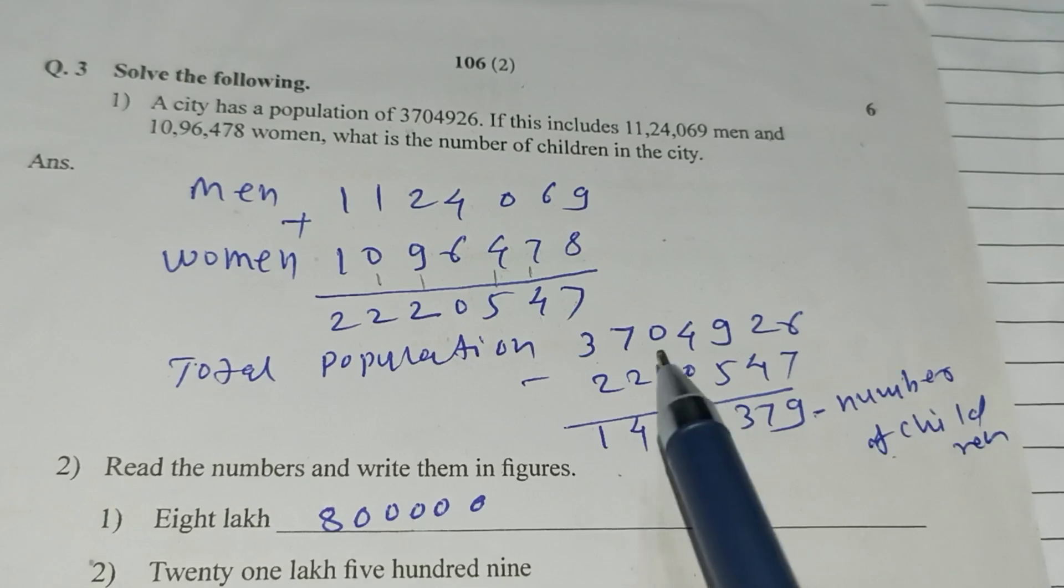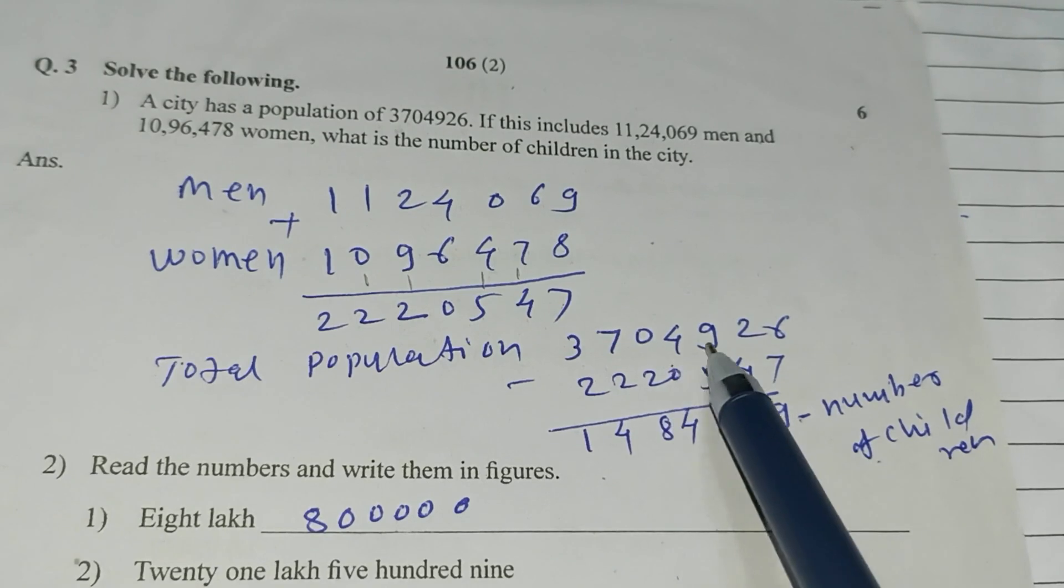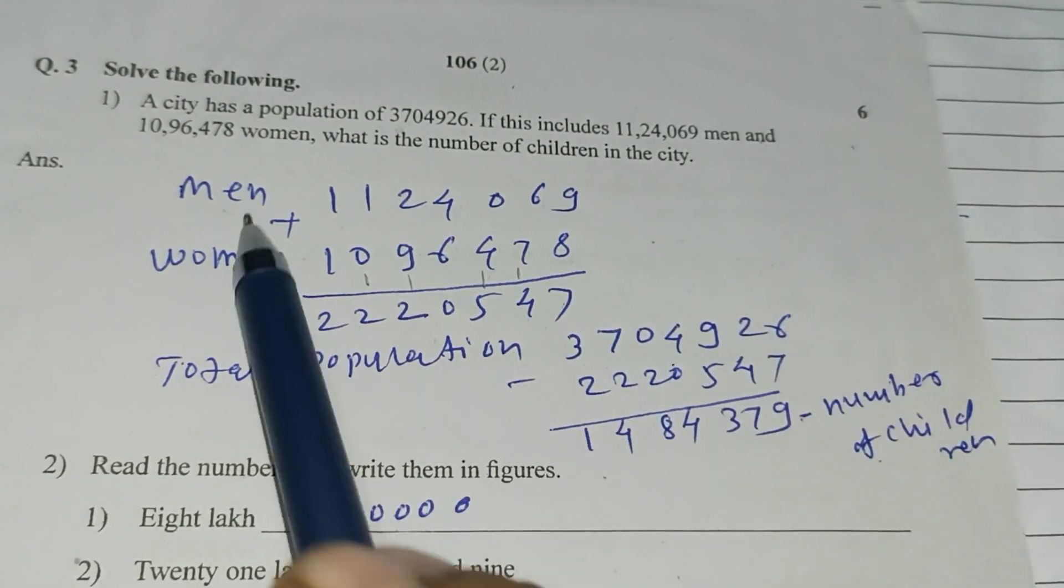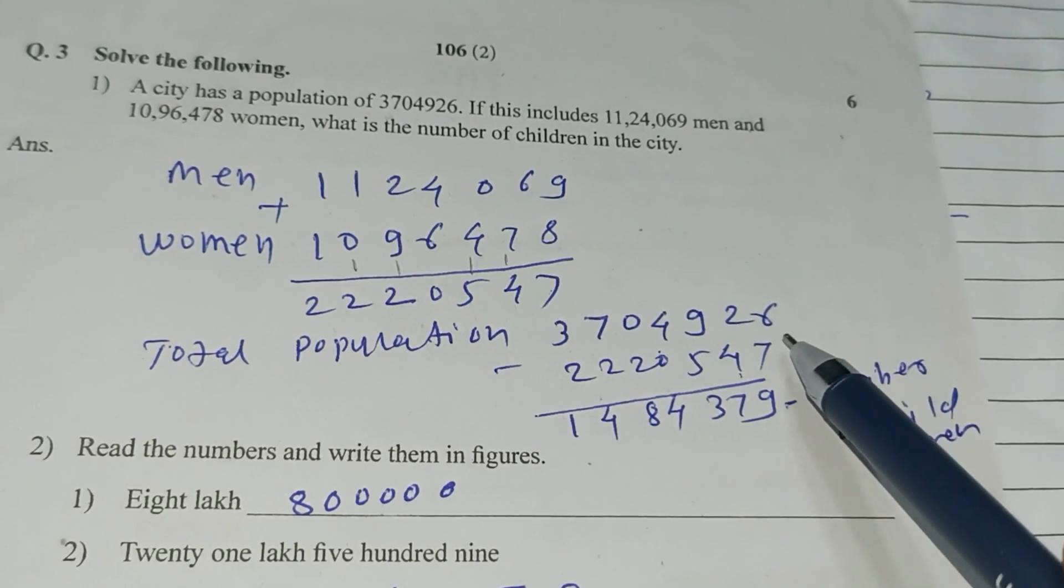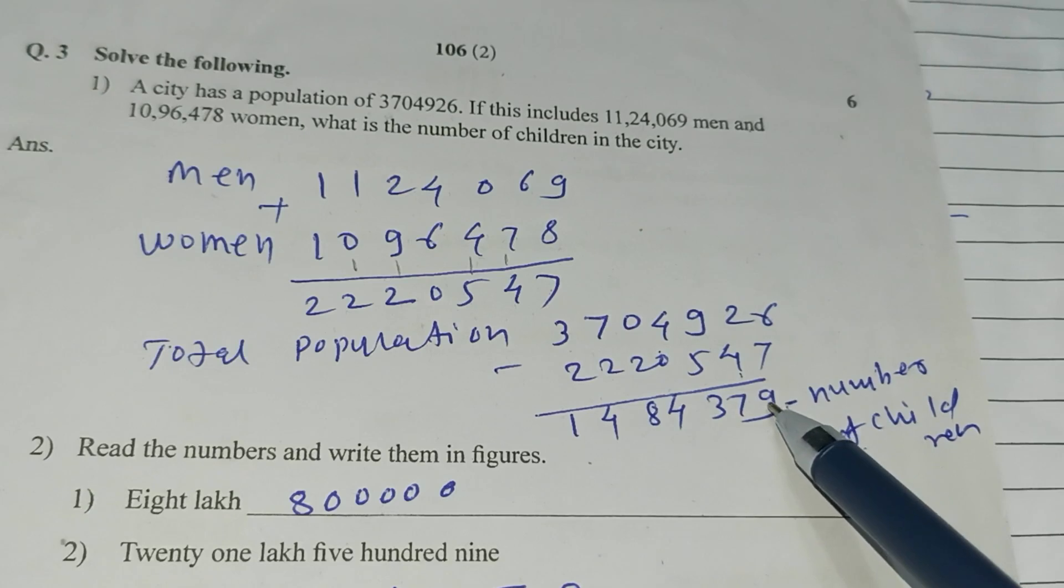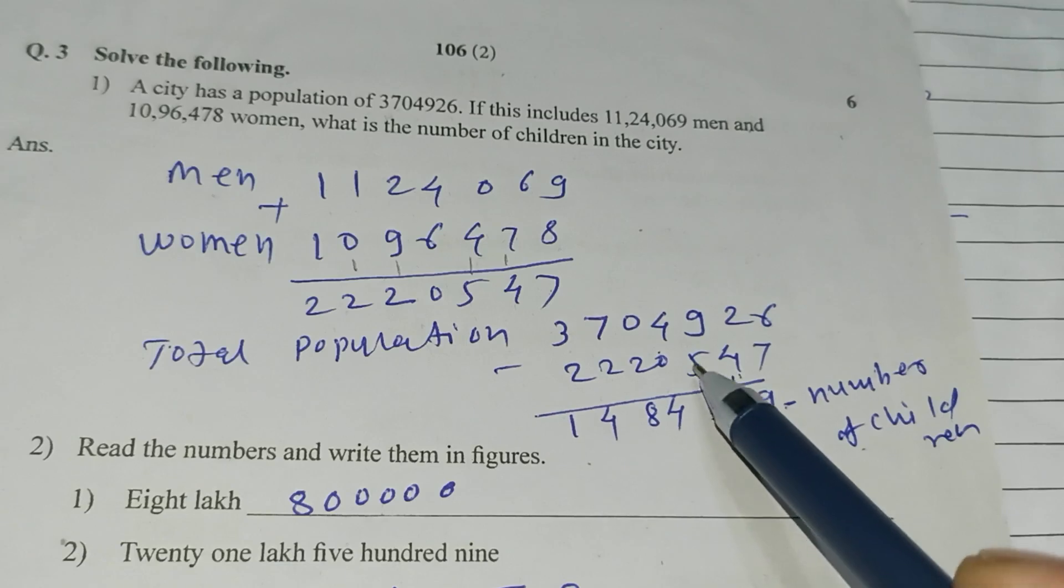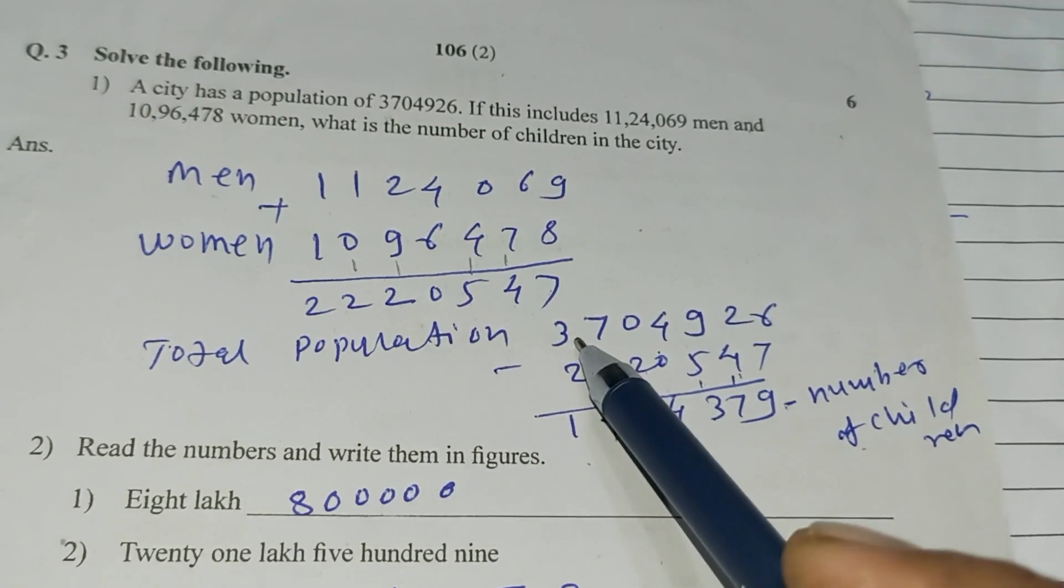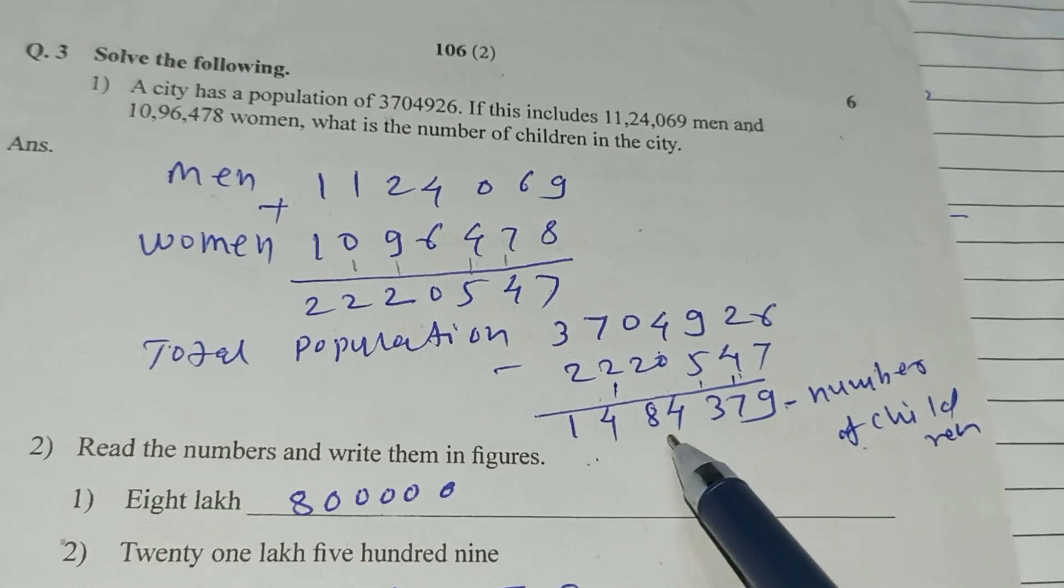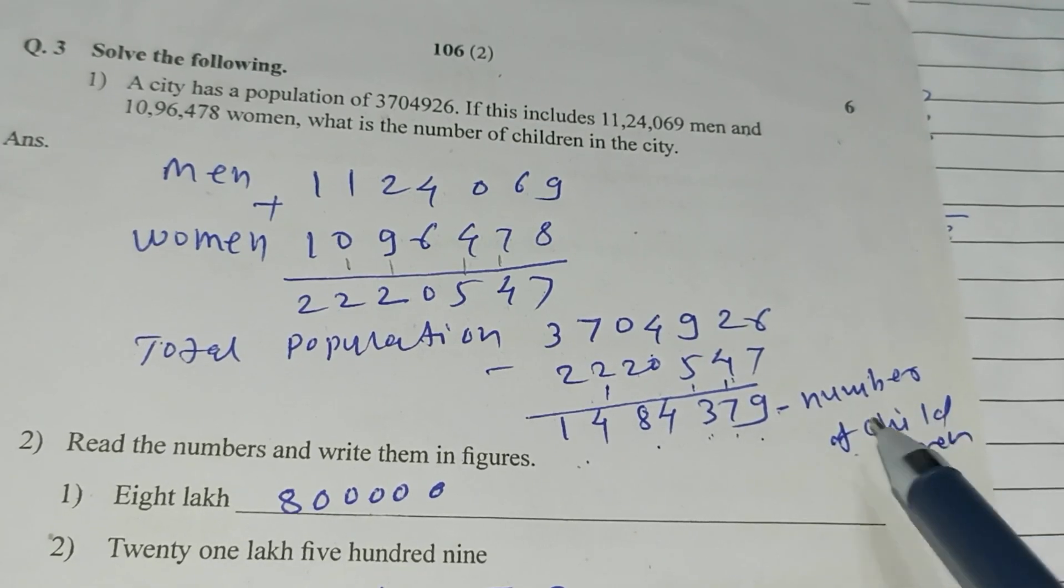Total population 37,04,926 minus this total, men and women, minus 22,20,547. Here 16, minus 7, 9. Reminder, 12 minus 5, 7. Reminder, 9 minus 6, 3. 4 as it is. 10 minus 2, 8. 7 minus 3, 4. 3 minus 2, 1. 14,84,379 number of children.